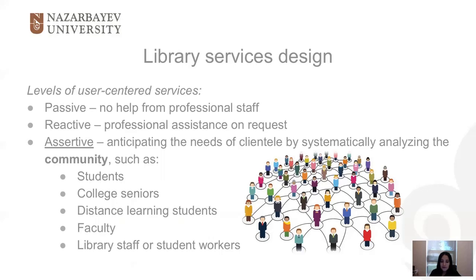User-centered services, which are one of the main objectives of any type of library and information institution, include three different levels. Passive and reactive levels of services are mostly comprised of traditional and modern library and information services, such as circulation and renewal of books and other physical library materials, reference and information services, and so on. While assertive level of service is counted for the future.